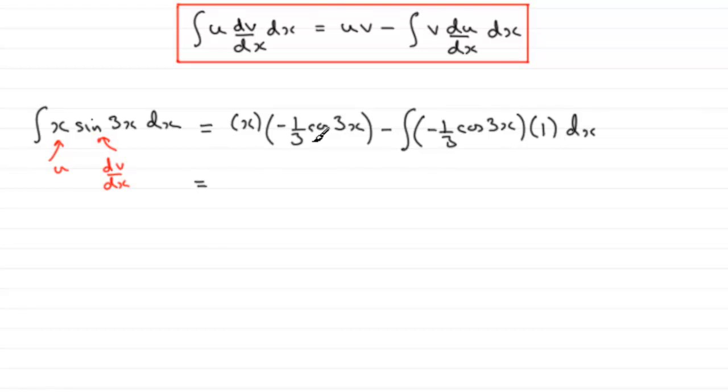Clean up each term. The first term when cleaned up is minus x over 3 cos 3x. And then we've got minus minus a third times 1, so it's going to be plus a third. And it's always a good idea to bring constants out the front of an integral. And that just leaves us with the integral of cos 3x with respect to x.